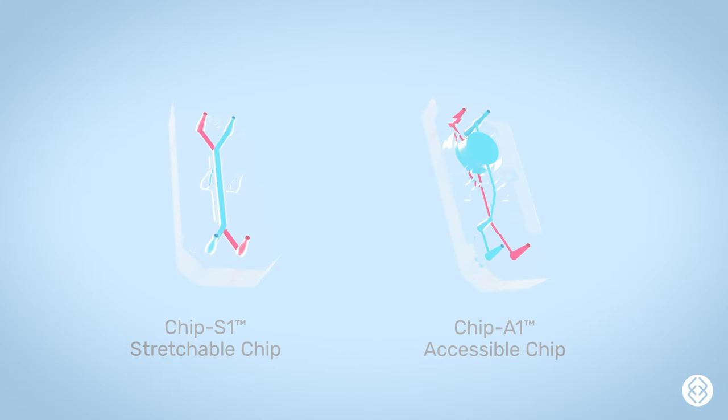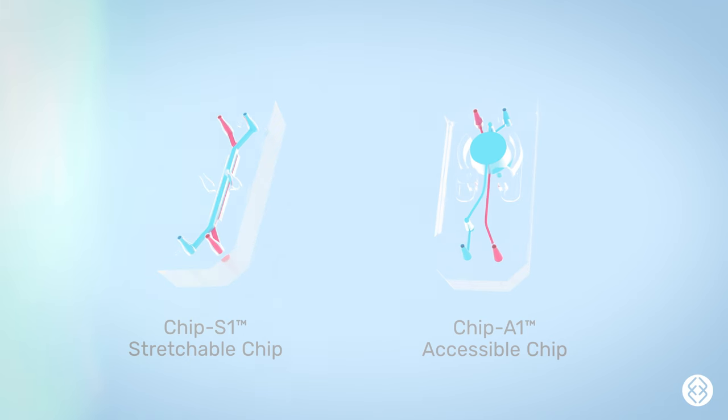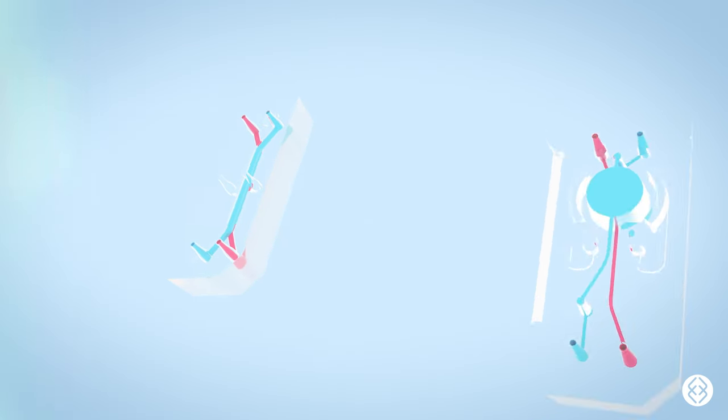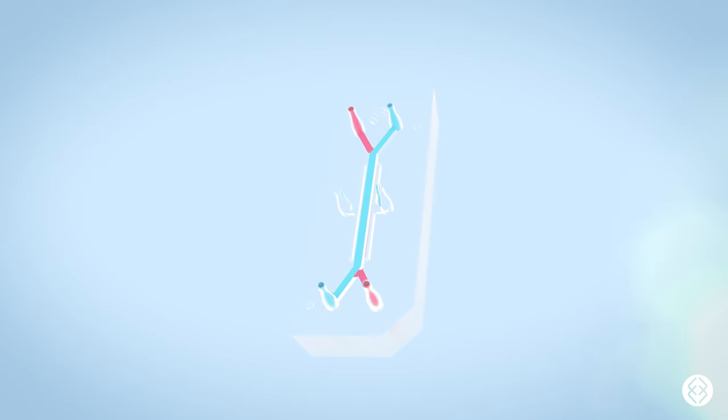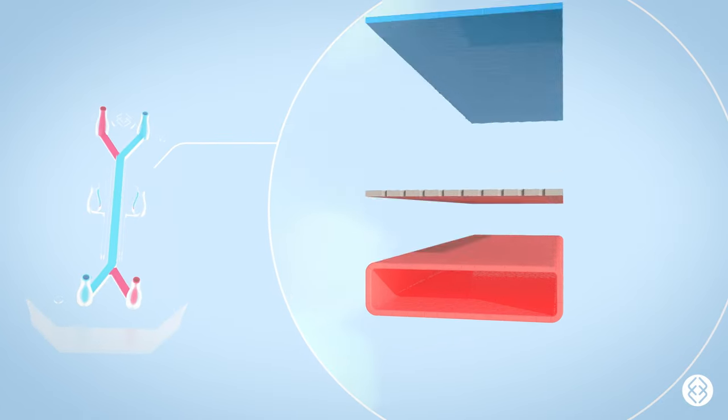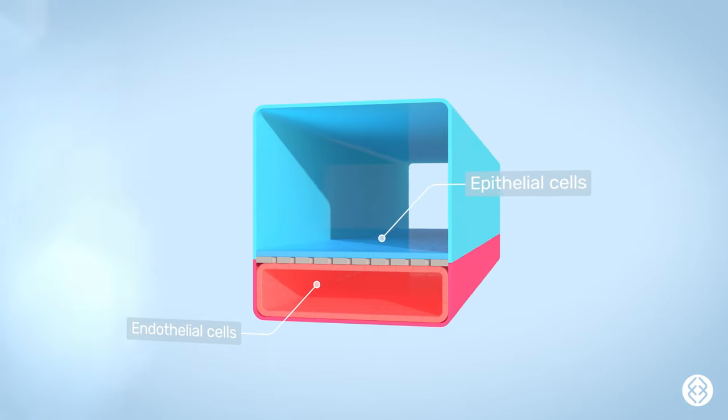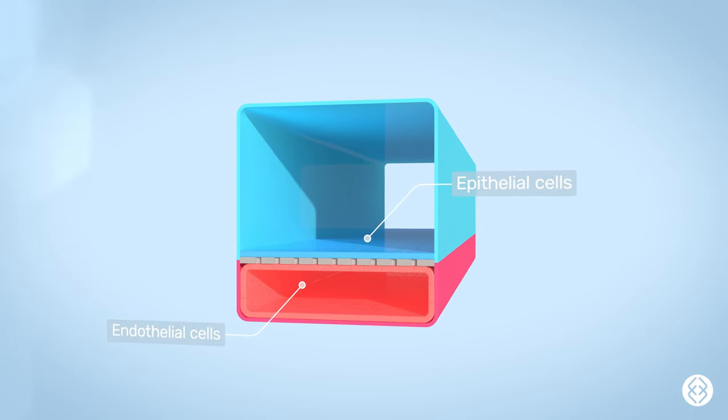The Emulate organ chip portfolio enables users to recreate a wide variety of human tissues. Inside each Chip-S1 stretchable chip, there are two parallel microfluidic channels that contain a co-culture of primary human cells with a tissue-vascular interface.